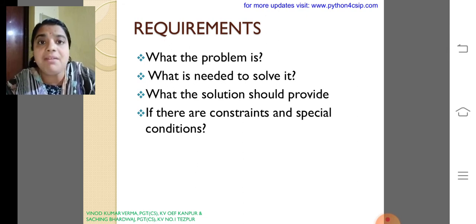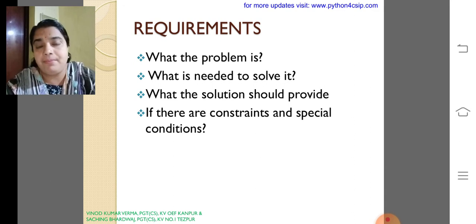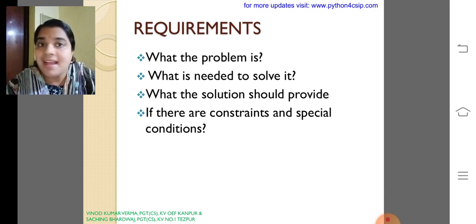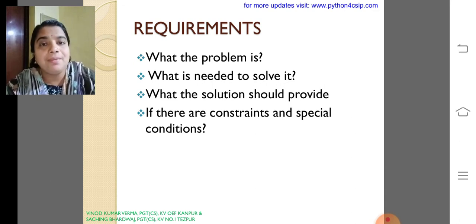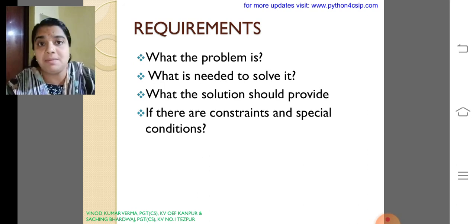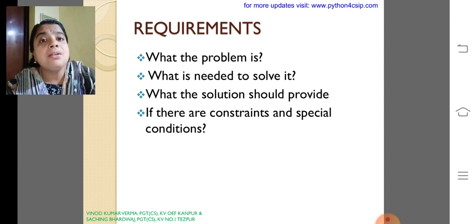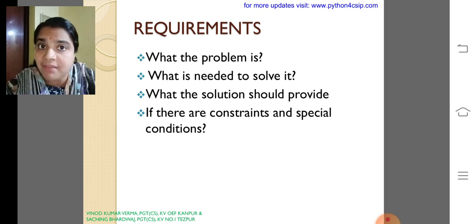If I am giving a problem like find the square of all the odd numbers from 6 to 12, what are all the requirements? I need a range, that is 6 to 12. What are the odd numbers within that 6 to 12? 7, 9, 11. We should have to get the square of all these numbers.